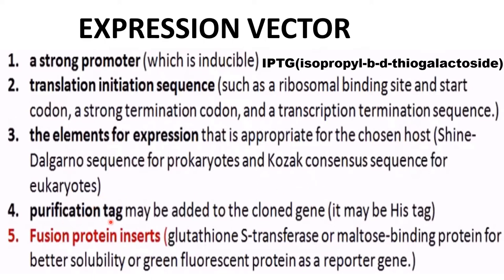A purification tag may be added to the cloned gene — mainly a histidine tag. Since this expression vector will produce a protein of interest along with other proteins inside the host, the expression vector consists of a purification tag, which is mainly the histidine tag, to help purify the protein of interest.